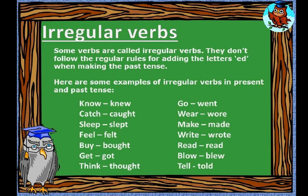Irregular verbs do not follow the regular pattern of adding '-ed' when making the past tense. Some examples are: know/knew, catch/caught, sleep/slept, feel/felt, buy/bought, get/got, think/thought. These words are converted to the past tense without adding '-ed' or '-d'. So these are the differences between regular and irregular verbs. I hope all the points are clear.